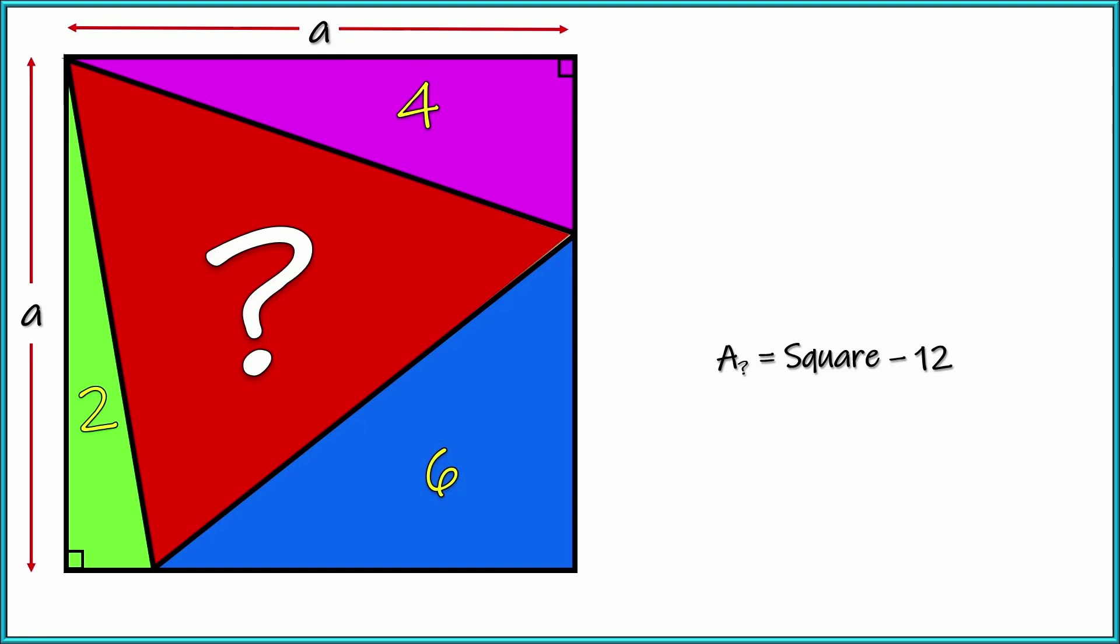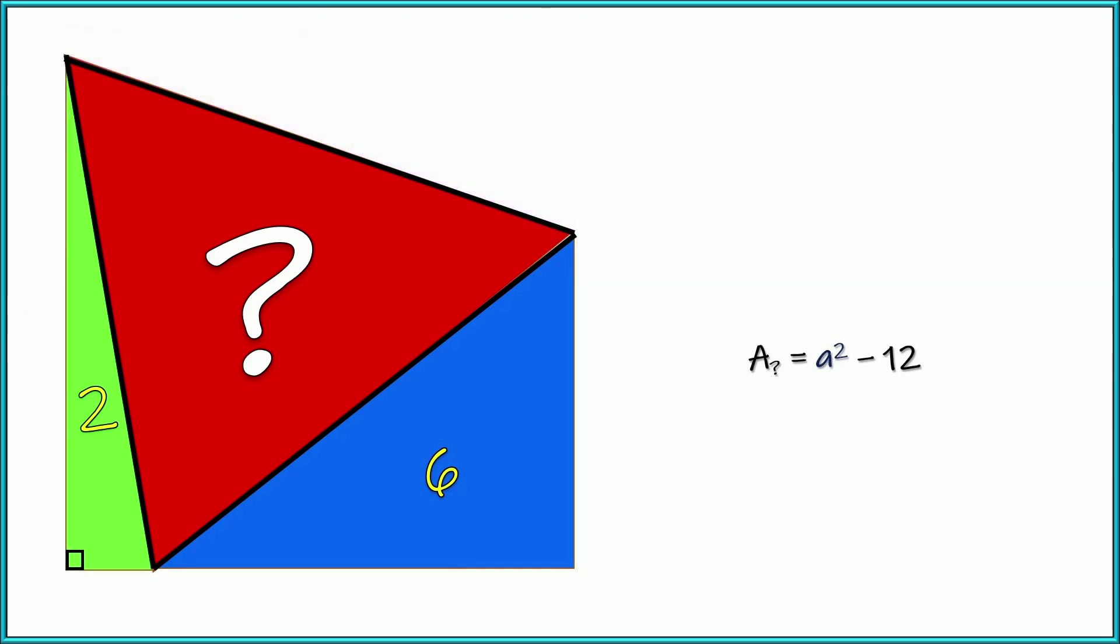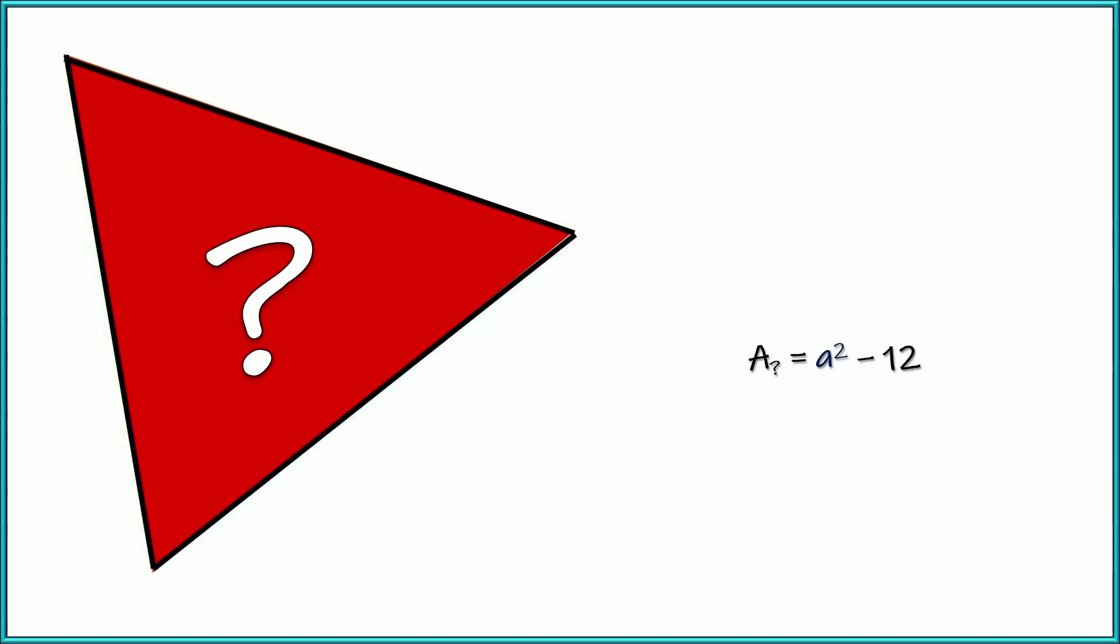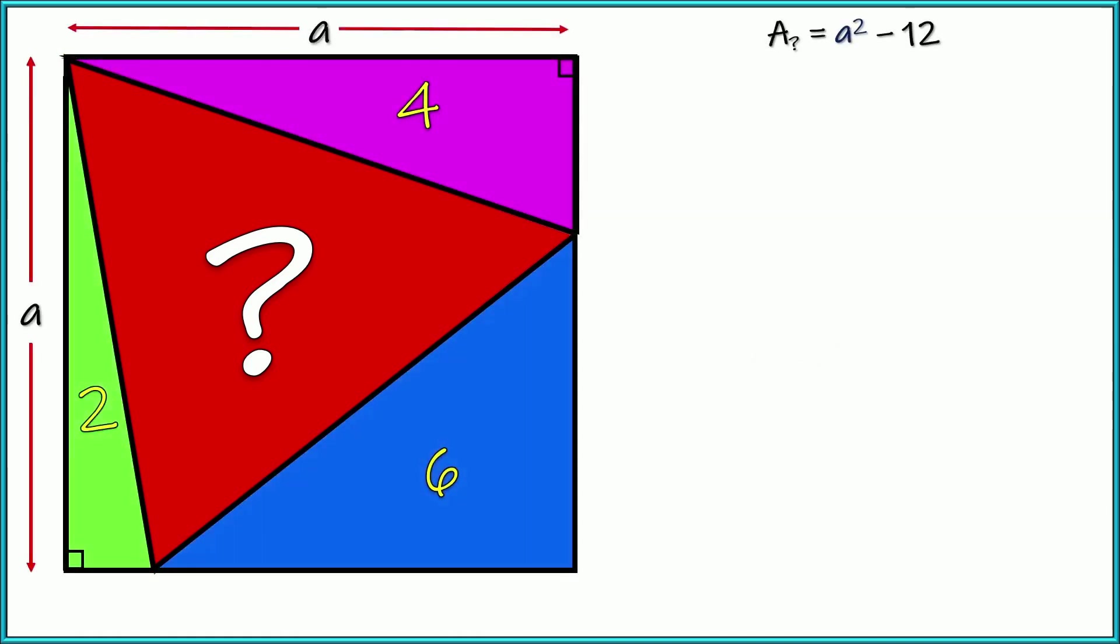All right. So now really simple, the area of the square. Well, since the side lengths are A, that's just going to be A squared, right? So that's going to be our goal. Figure out A, subtract those three triangles, and what will be left is the area of our red triangle right there in the middle. All right. So let's go ahead and see if we can tackle this now.